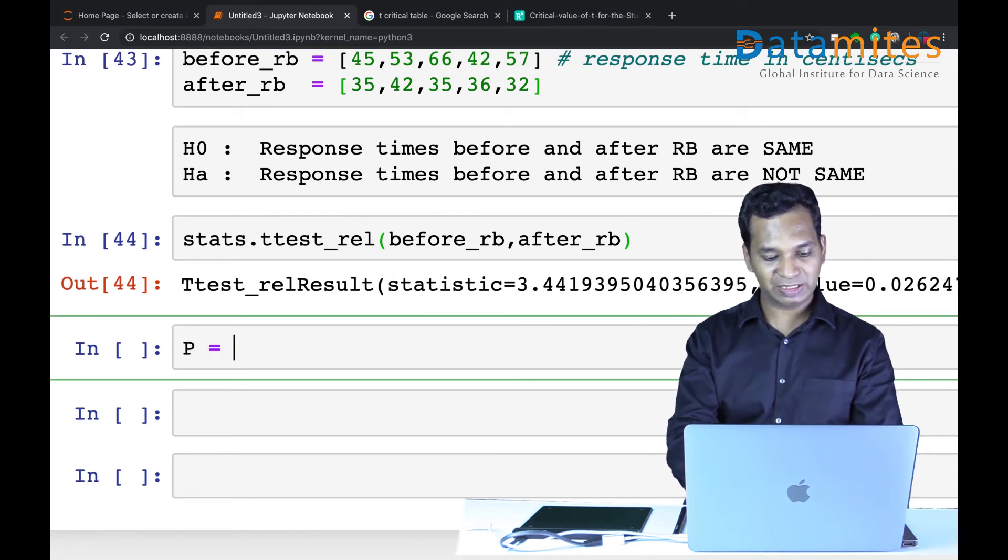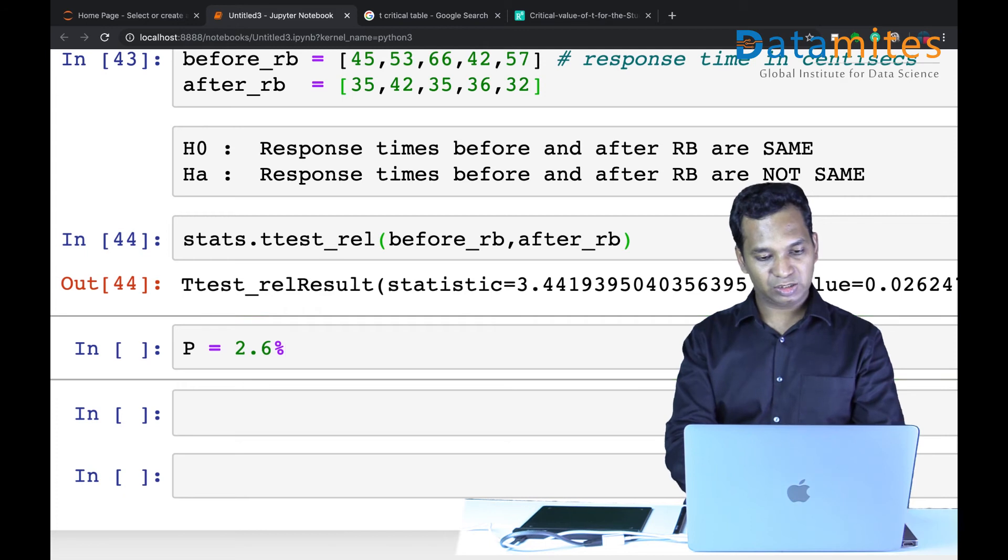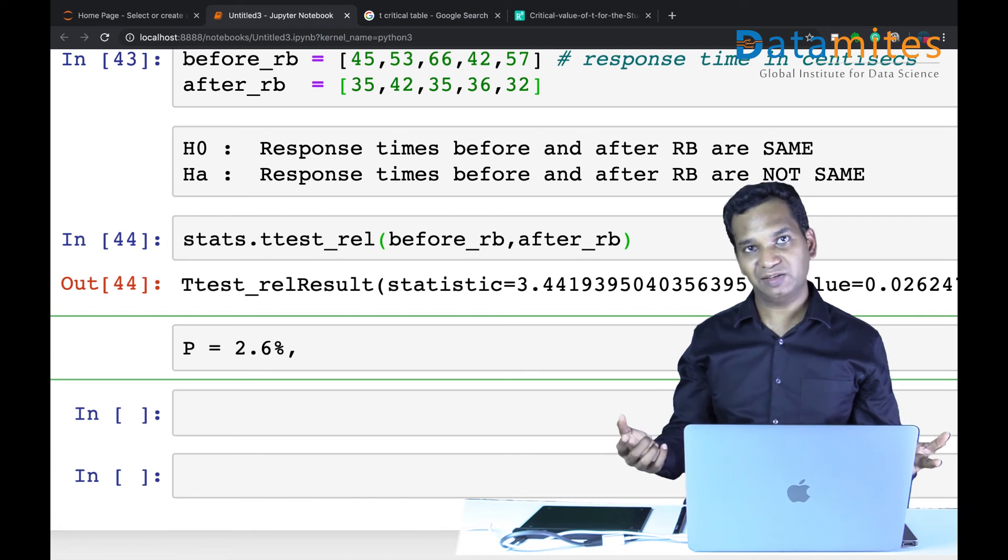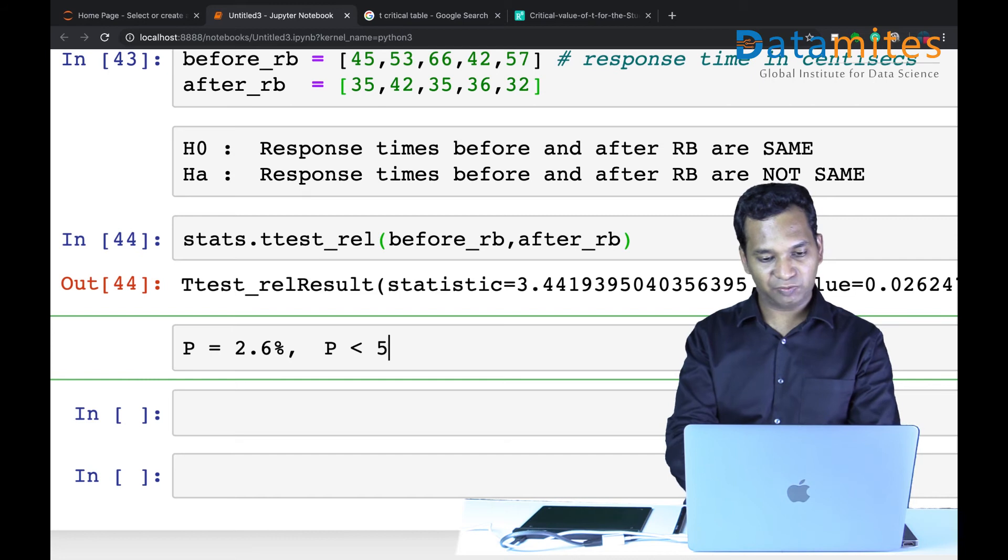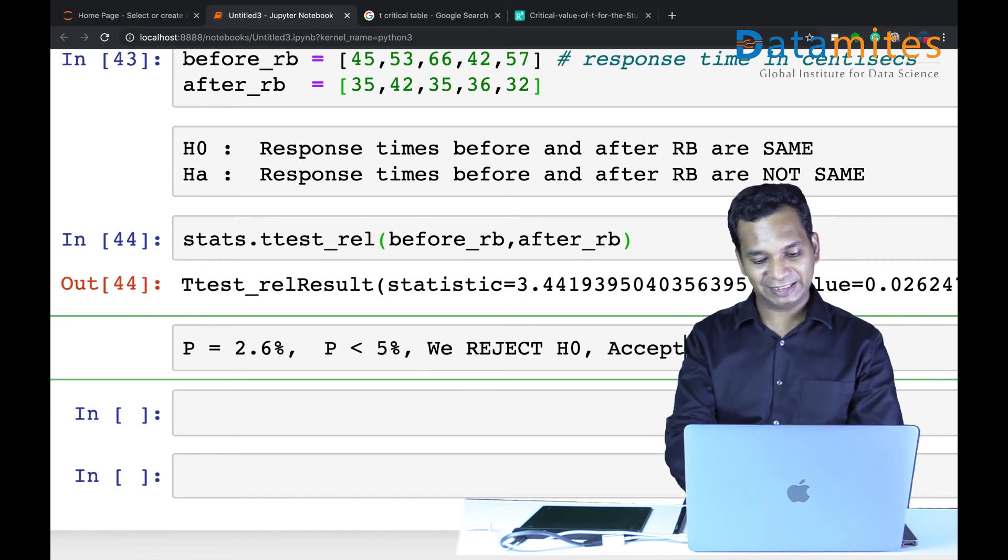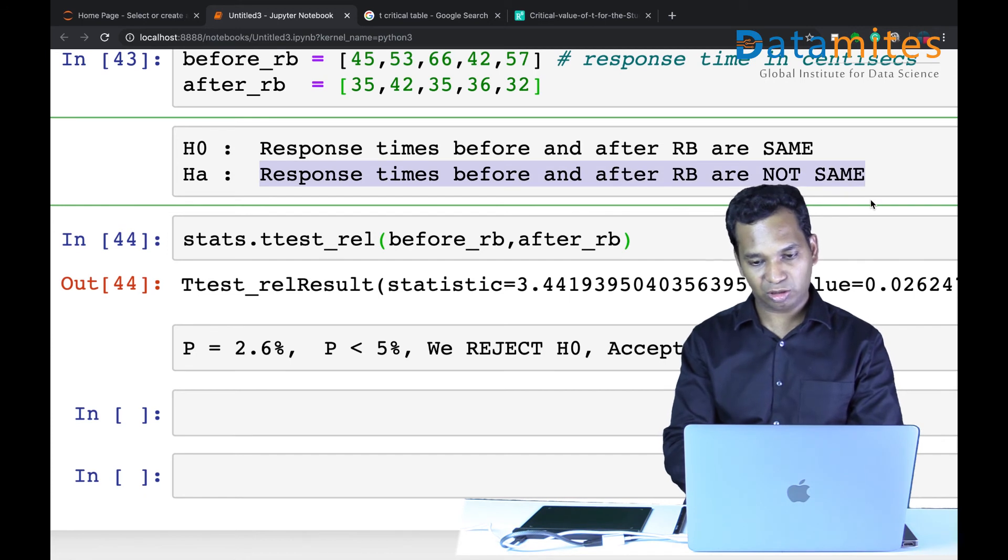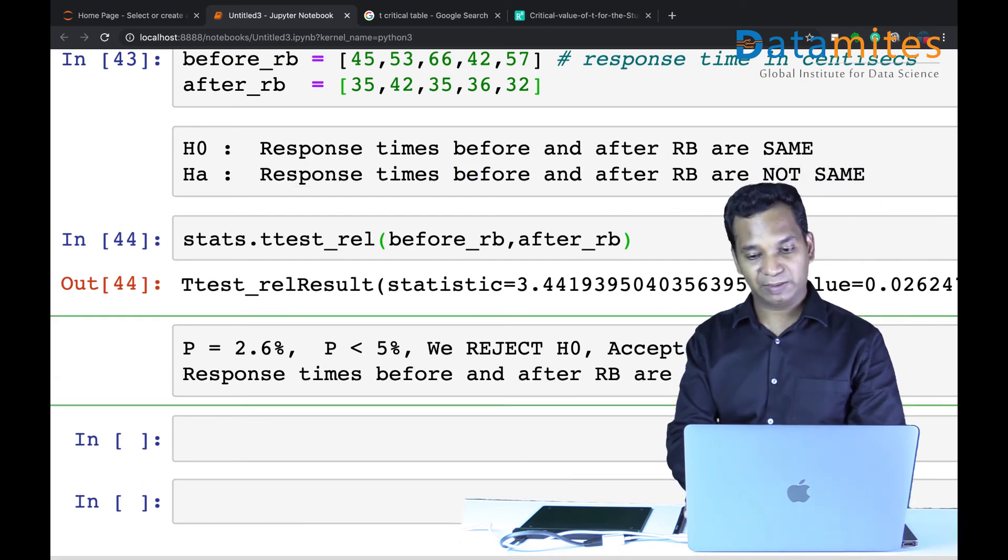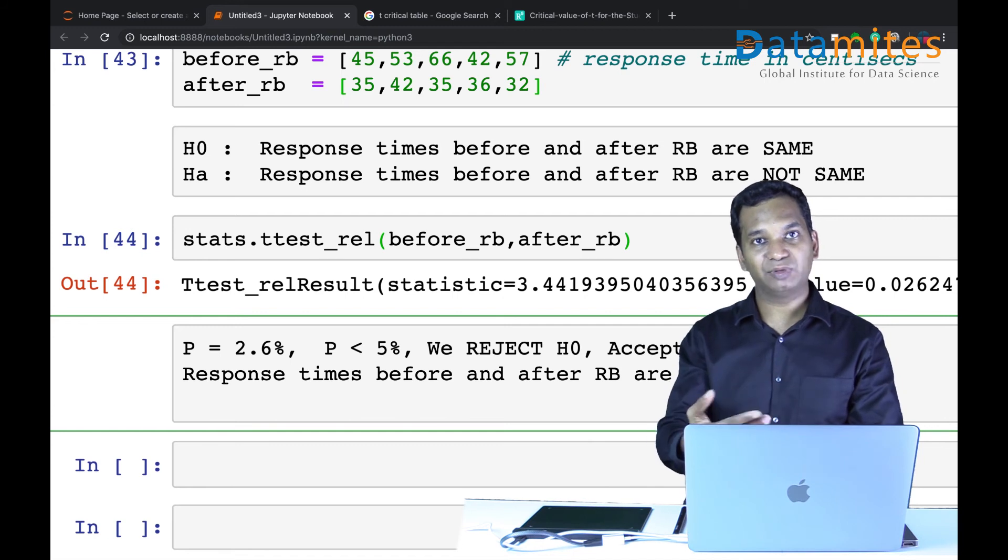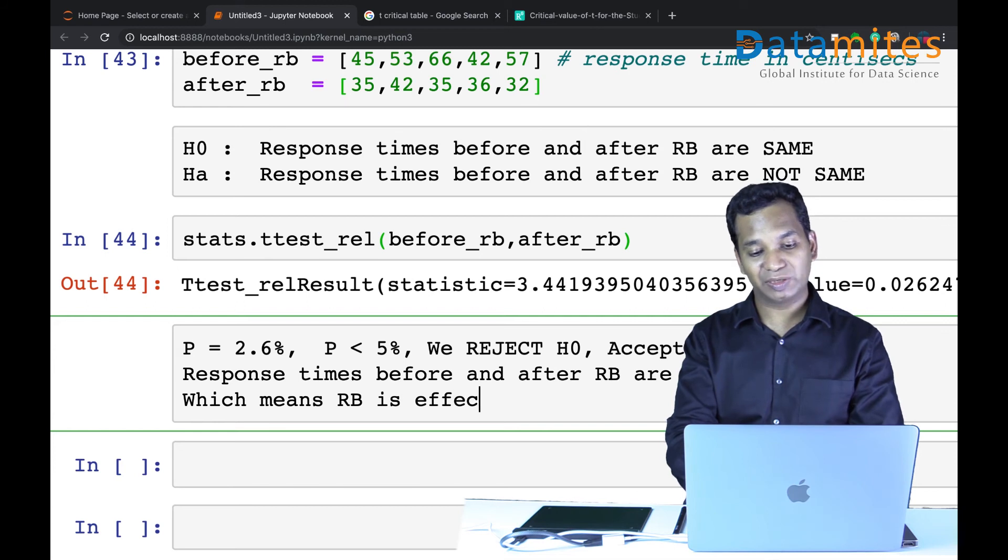Run it. Your p-value is 2.6 percent. Again, you could pause this video and conclude things yourself. P is much less than five percent, so we reject the null hypothesis. When you reject null hypothesis, we accept the alternative. What is the alternative? It says response times are not the same, which means Red Bull is effective.